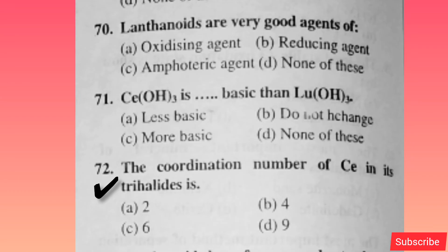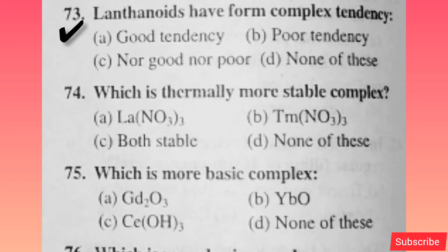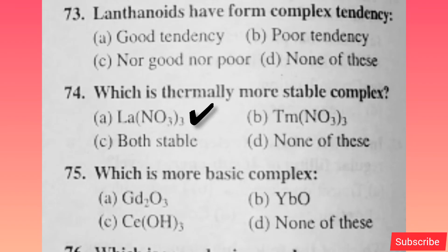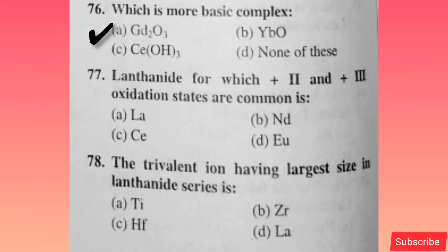The coordination number of Ce in its trihalides — option B is correct. Lanthanides have a lower complex-forming tendency — option B is correct. Which is thermally more stable complex? Option A is correct. Which is more basic complex? Option A is correct.